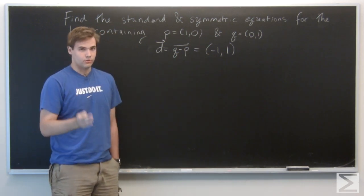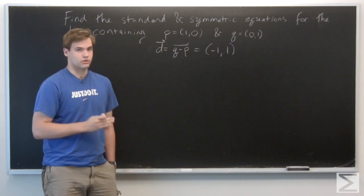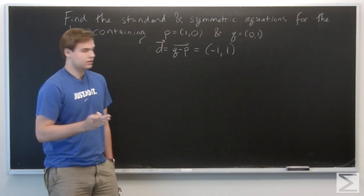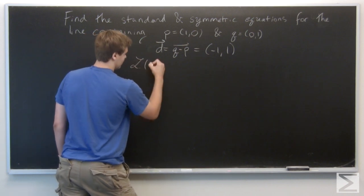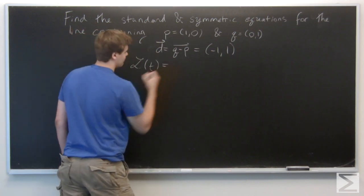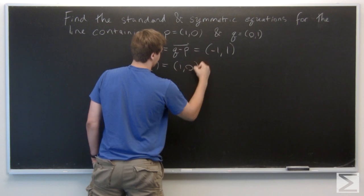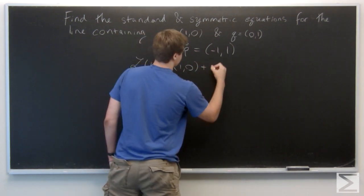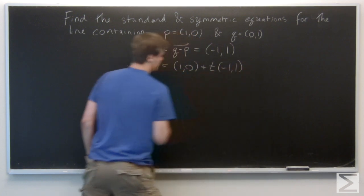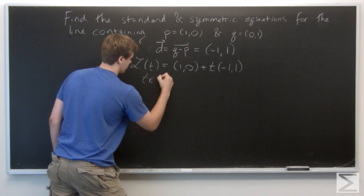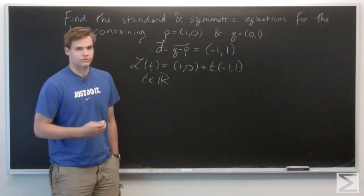All we need for the standard vector equation of a line is a point on the line and a vector in the direction parallel to the line. So we can pick P. The line L is given by (1, 0) plus T(-1, 1), where T is just some real number. This is our standard equation of a line.